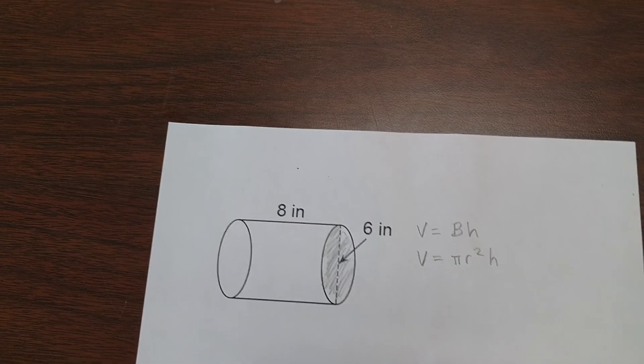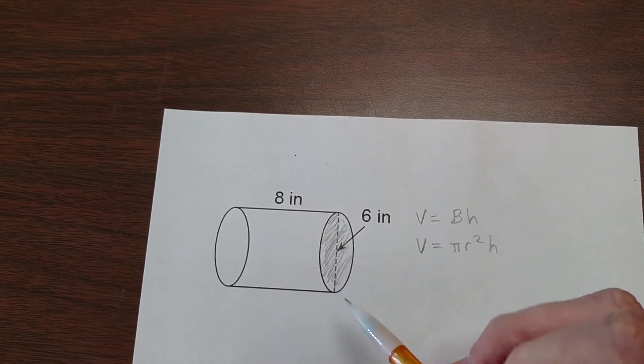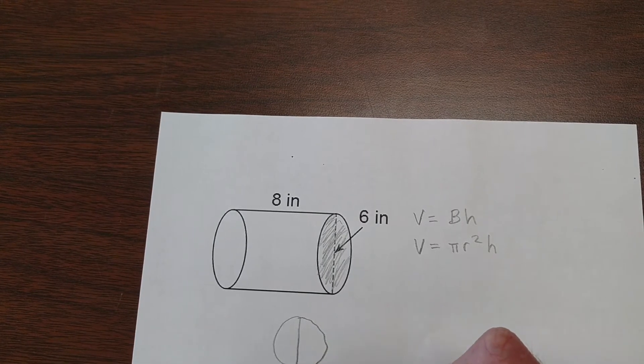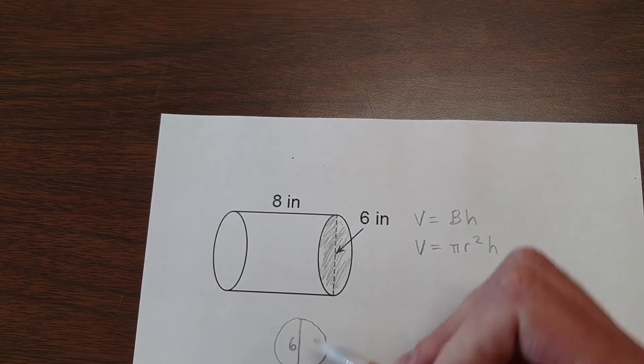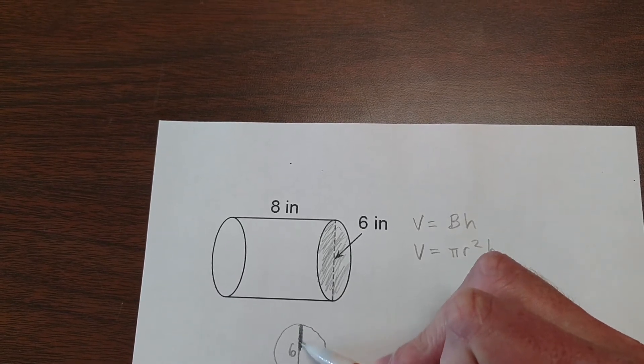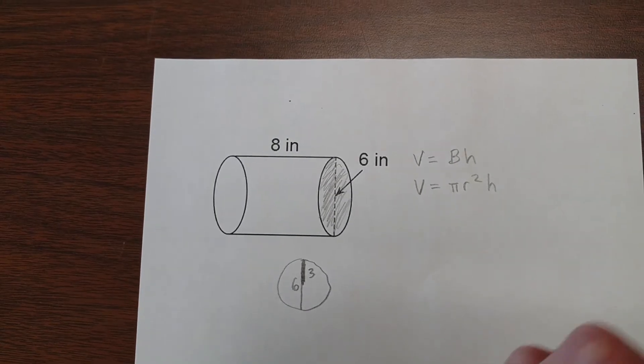The other important thing to remember with this problem is that we're not given the radius, we're given the diameter. The diameter of a circle goes all the way across. The radius only goes to the center of the circle. So our radius is actually half of six, which is three.